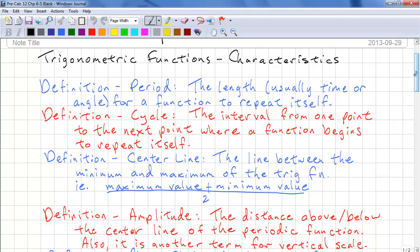The center line is the line between the minimum and maximum of the trigonometric function. Another way to look at this is as the average value between the minimum and maximum.